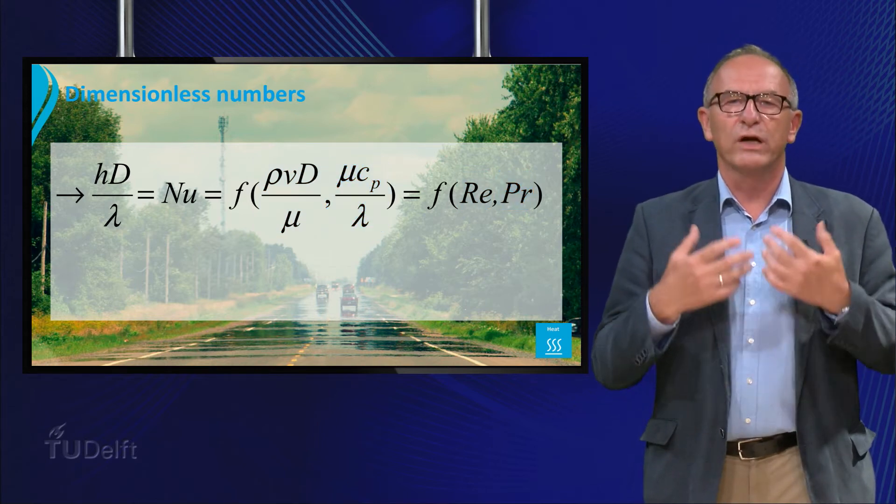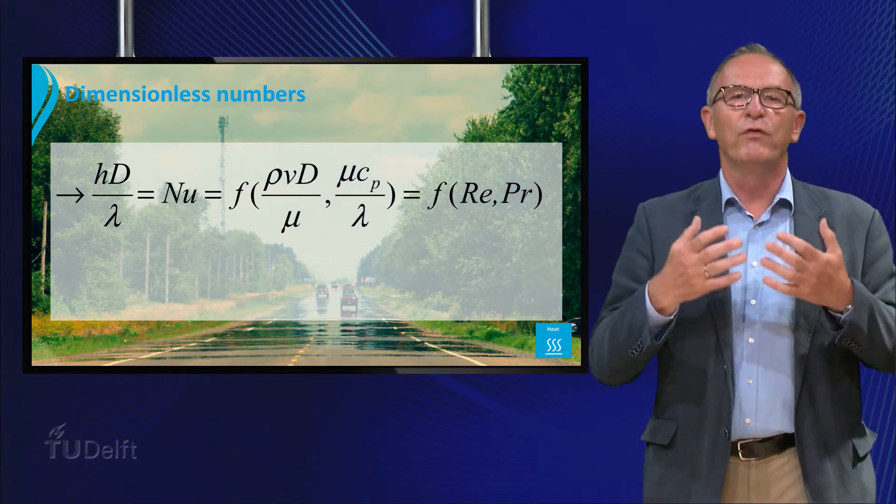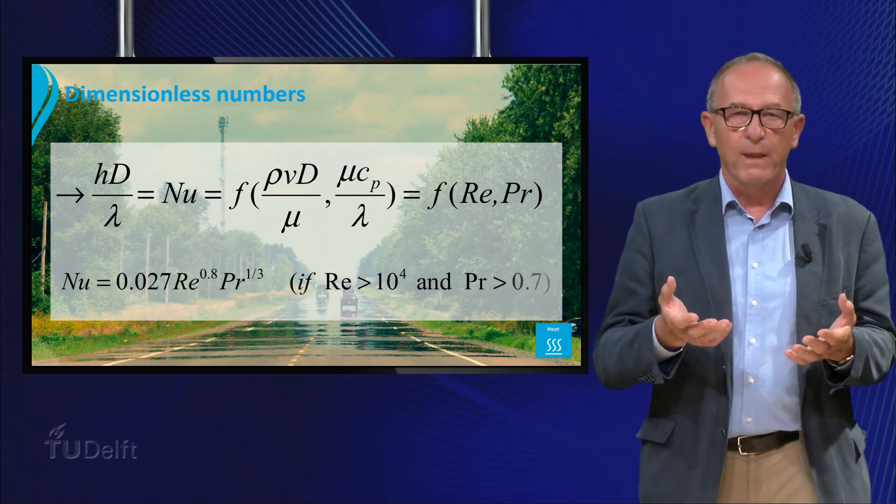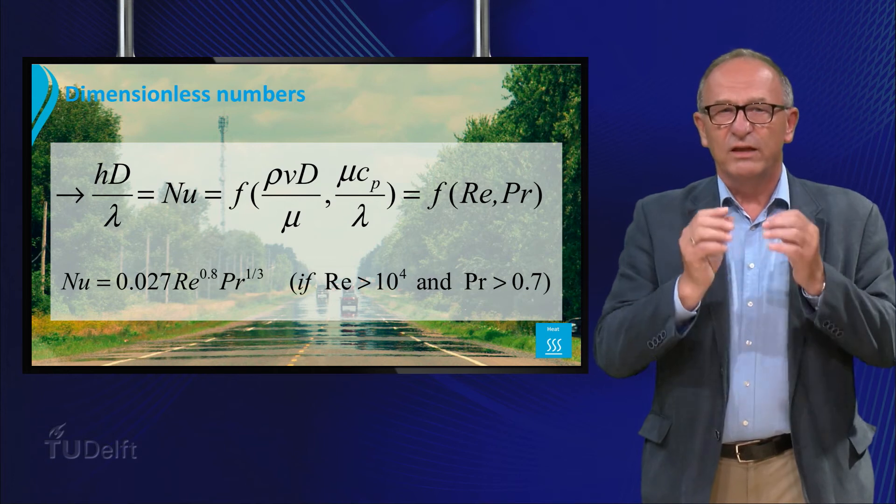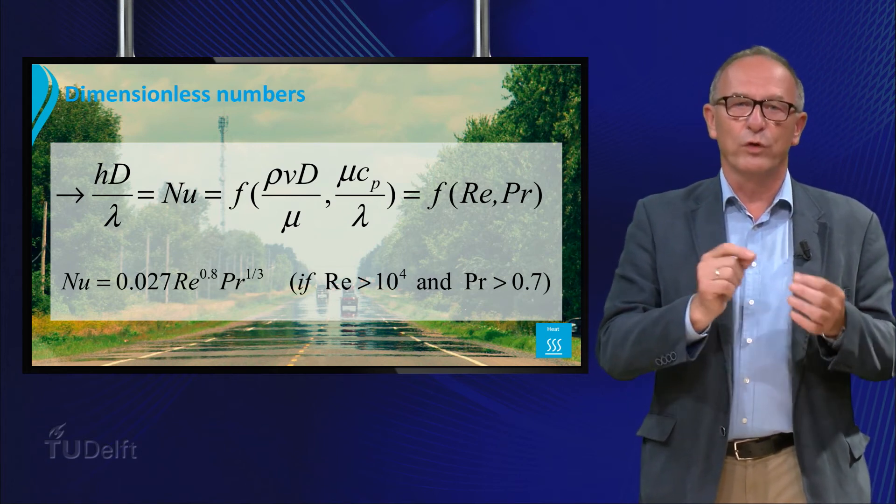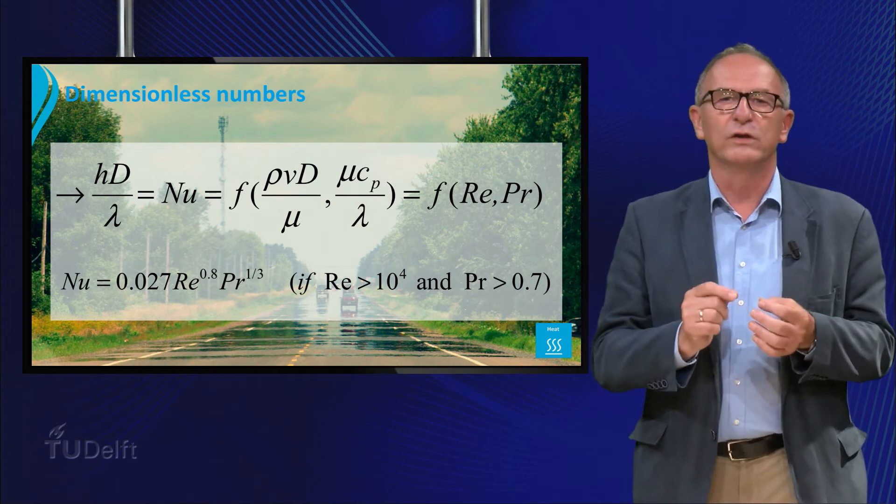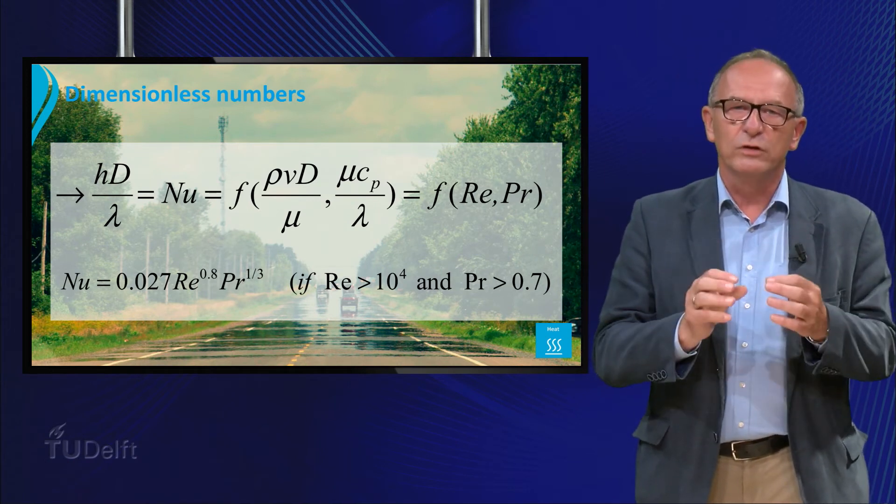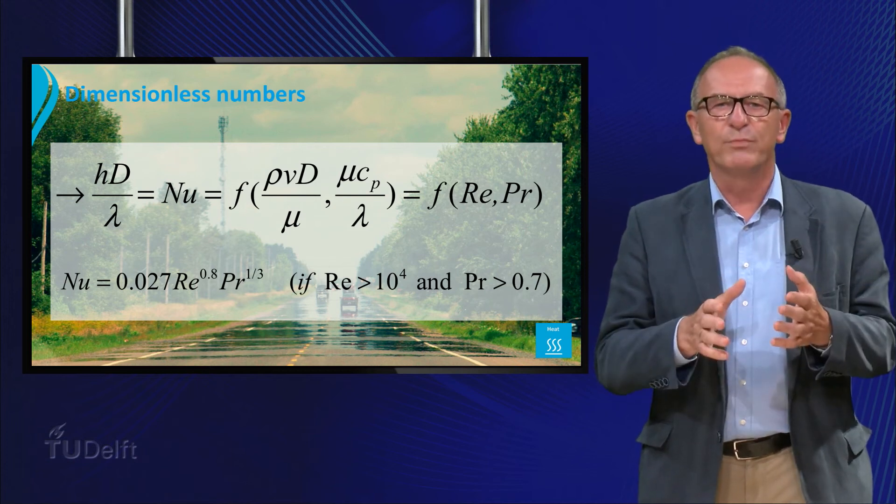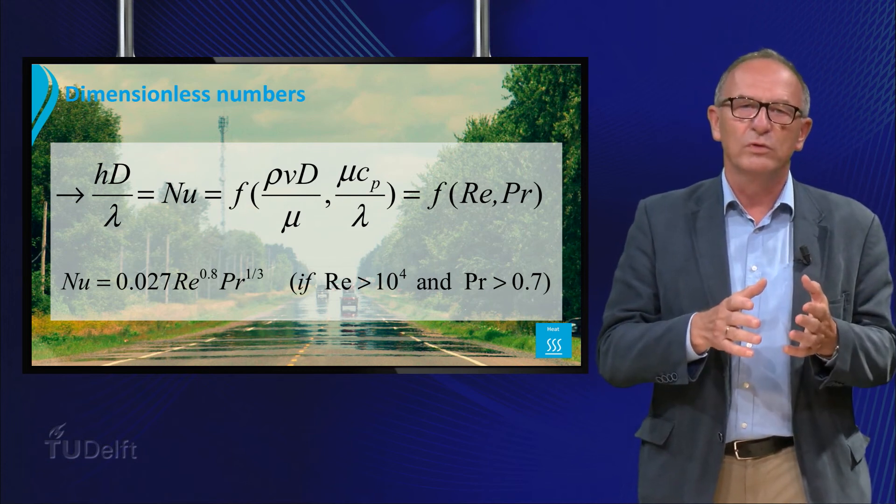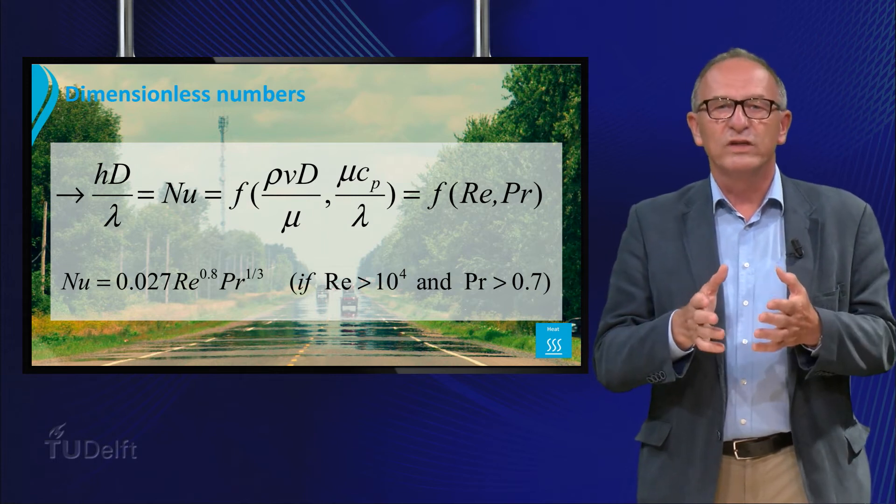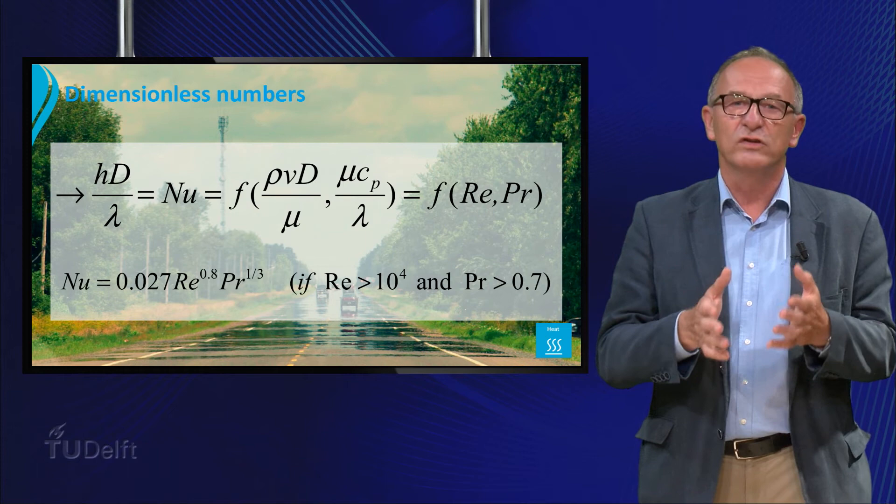A well known correlation to calculate the heat transfer coefficient in fully developed turbulent pipe flow is given. You have to realize that if you use this equation to calculate the heat flux from a hot wall to heat the fluid in the tube, we make the assumption that the flow is highly turbulent and as a result the temperature in the cross section of the tube has the same average temperature. As a consequence the calculated heat transfer coefficient is also an average.